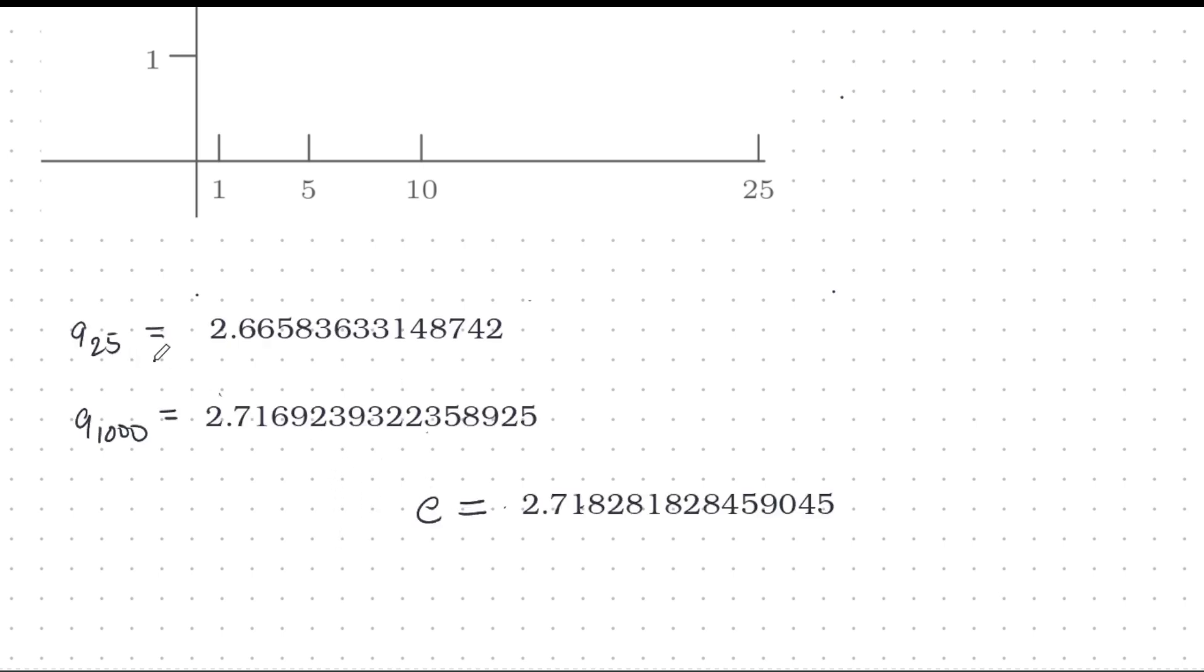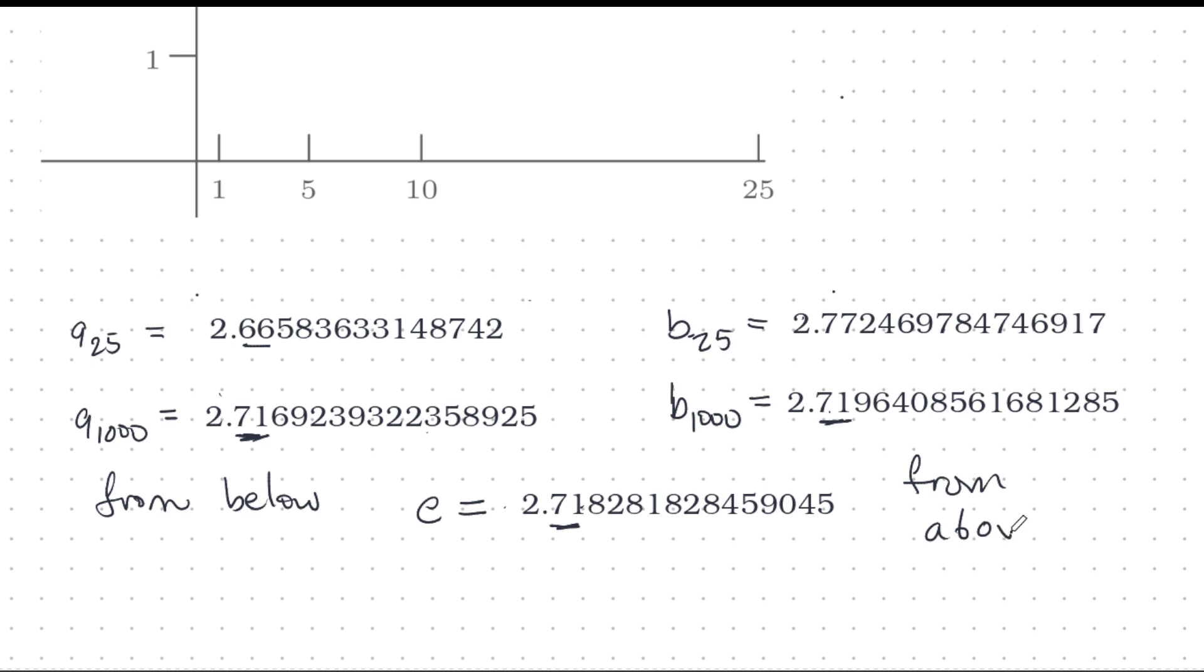Well, the 25th term of the sequence, well, we didn't get any decimals right compared to e. And at the 1000th term, we got two. So that's slow, but it eventually gets there. Let's have a look at the b sequence. Likewise, it takes a thousand terms before we get the first two right. And notice that the a's are increasing. They're approaching e from, from below. And the b's approach e from above. And that's the difference between these two ways of defining e by a sequence.